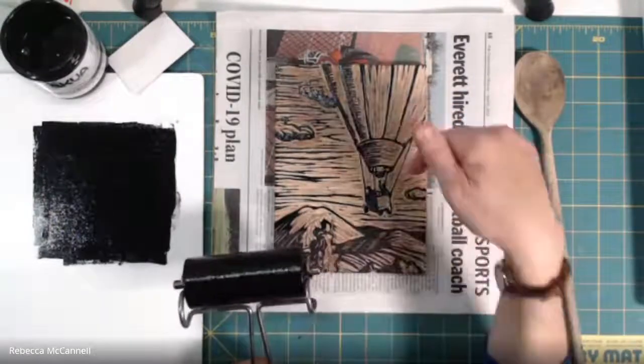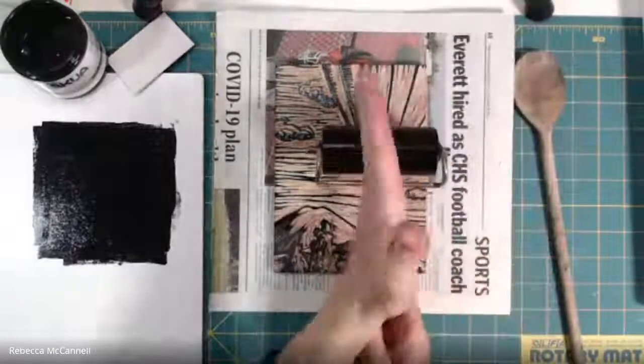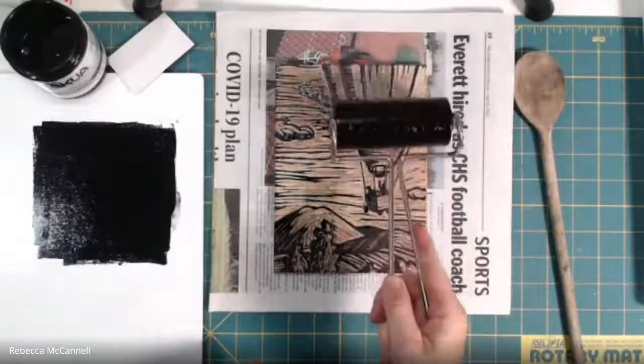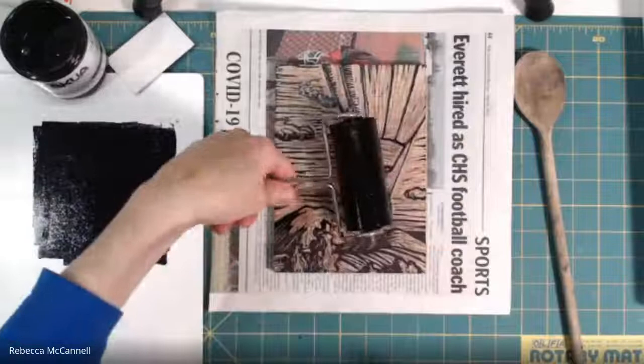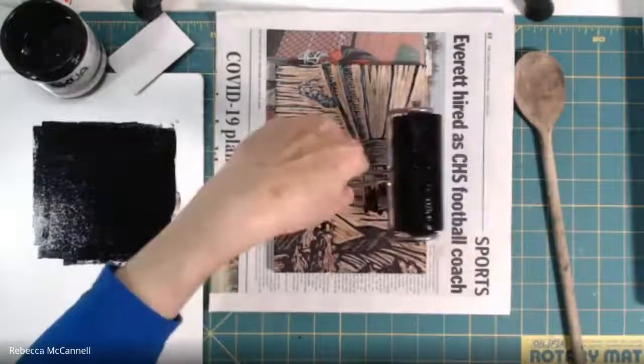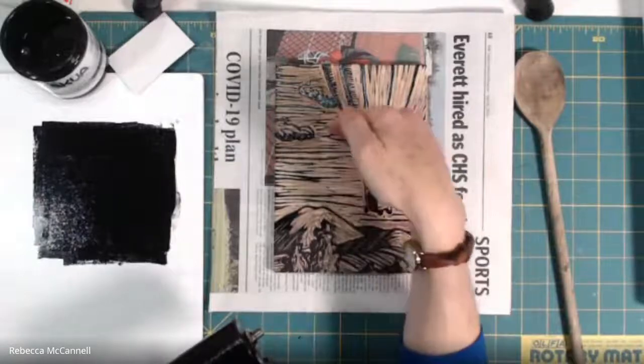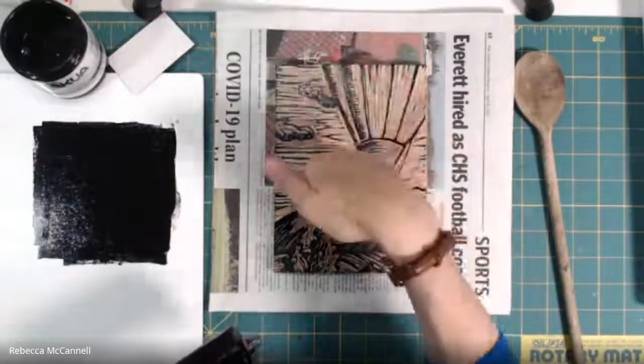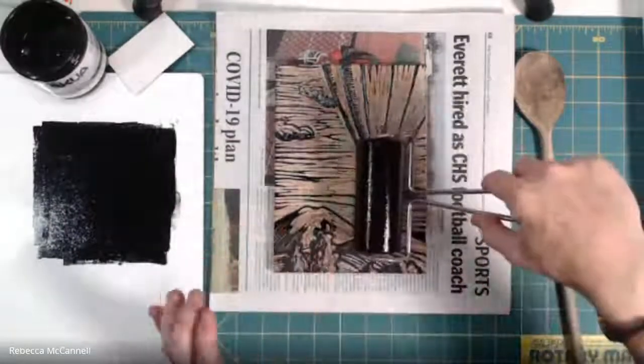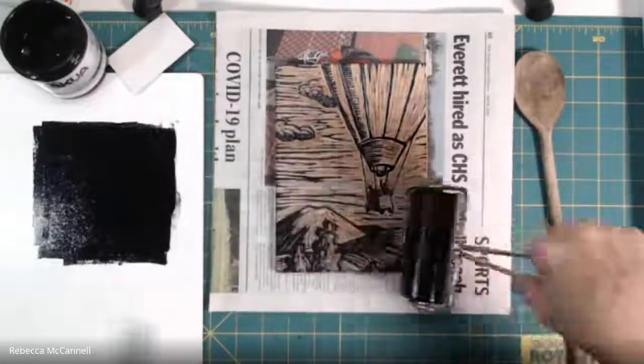On this part of the balloon I'm going to change direction that I'm rolling because more of the marks run vertically, so I want to keep my brayer perpendicular to the majority of the marks to minimize how many times the roller drops down into the low areas. You might also think about this when you're cutting your block. I intentionally leave some marks out here in these areas of the sky rather than cutting the block completely away. I leave a few little strands of imagery that act like little bridges that the brayer can rest upon as I'm rolling the block up.